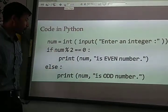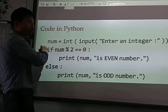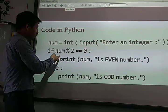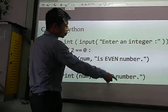That part is excluded. Now if the number is, suppose user inserts which is 5. So 5 divided by 2, it will not be 0, it will be 1. So it will directly come to the else part. And in the else part it will print 5 is odd number.